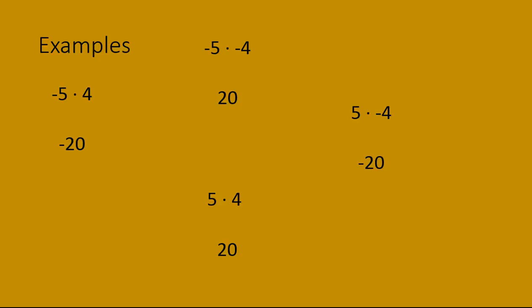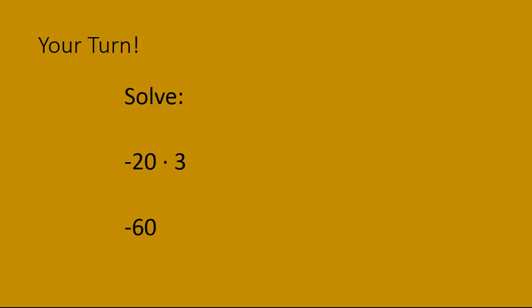You can see that if the signs are different — negative and positive, or positive and negative — the result is negative. If the signs are the same — negative, negative, or positive, positive — you get a positive result. Let's practice. Try solving negative 20 times positive 3. Remember to check your sign. Did you get negative 60? A negative times a positive gives you a negative result, and 20 times 3 is 60.